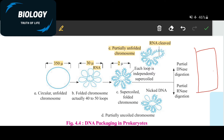Inside the cell there is a nucleus. The nucleus is a cell organelle. Inside the nucleus there is a chromosome. On the chromosome there is DNA. On the chromosome there is also a gene, and a gene consists of DNA as well as RNA. DNA is a genetic material which transfers the hereditary character from one generation to the next.